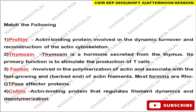Next, match the following. Profilin is an actin-binding protein that is involved in the dynamic turnover and reconstruction of the actin cytoskeleton. Next, thymosin is a hormone secreted by the thymus; its primary function is to produce T-cells. Next, formin is involved in polymerization of actin and is associated with the fast-growing end — that is the barbed end of actin — and formin is Rho-dependent GTPase.